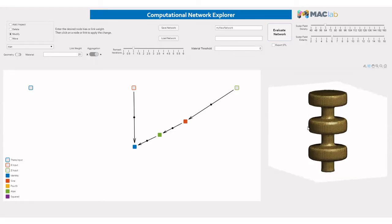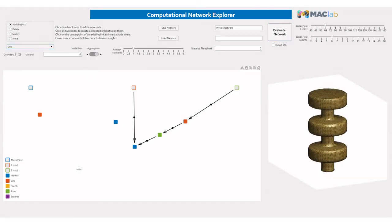Node types, node biases, node aggregation types, and link weights can easily be modified, as well as the mesh density, extents, and remesh iterations to adjust the model.